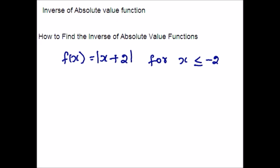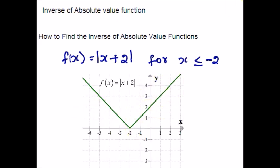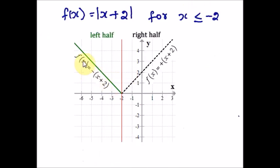Here is the second example. If you graph this absolute value function without any restriction to its domain, it will look like a v-shape. It is just the parent function |x| with 2 added, so it will be shifted 2 units to the left. However, if we apply the restriction x ≤ −2, the graph of f(x) = |x+2| is modified to just the left half of the original function. The left half can be expressed as the line f(x) = −x + 2, and the right half is f(x) = x + 2.